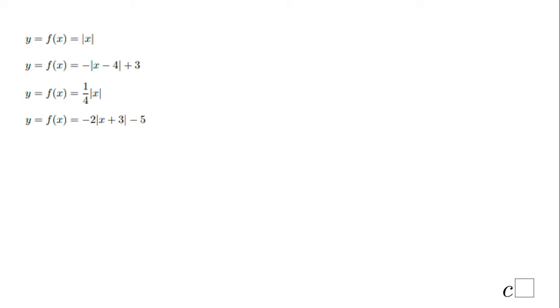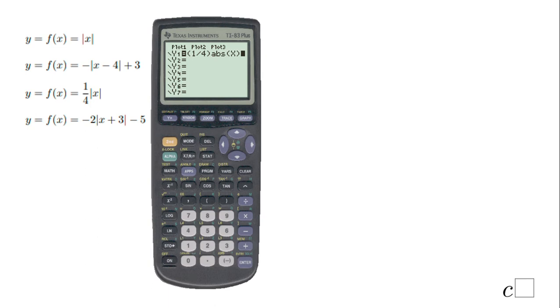Now we're going to move to the next one, the third absolute value function. You notice we have a fraction here, 1 over 4. That's the way you want to put it: 1 divided by 4. Use parentheses, which are right here. Of course, you can put it as a decimal, 0.25, if you want. Again, second catalog is going to give you the absolute value of X.